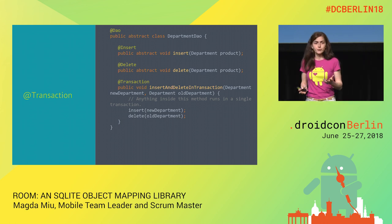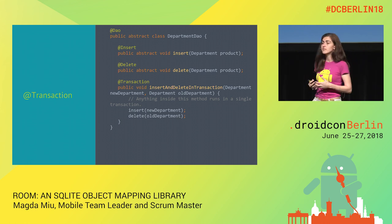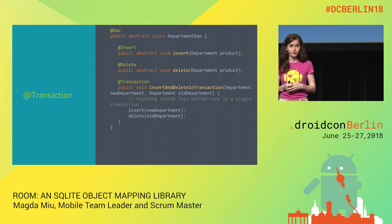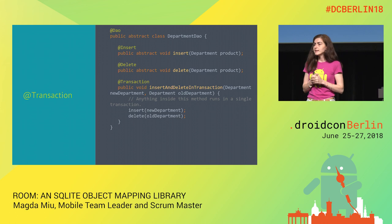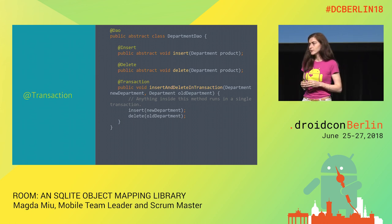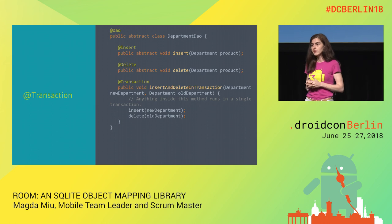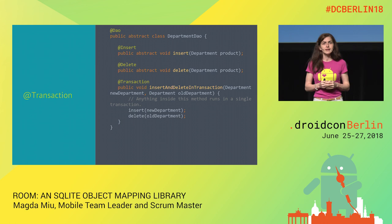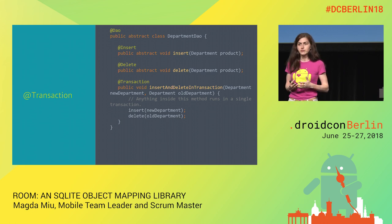For the @Transaction annotation: there are scenarios where you want to run different operations in the same block — for example, inserting a new department and then deleting an old one. Just annotate the method with @Transaction and everything executes in the same block. @Transaction can also be used with @Query in two scenarios: when you have a large amount of data that might not fit in the cursor window size (~2MB), and when using a POJO with the @Relation annotation, since Room queries the fields separately and you need consistent data.